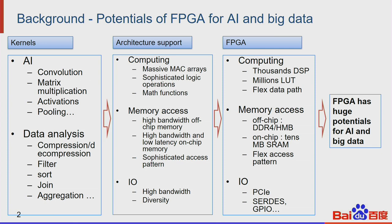We found the potential of FPGA for AI and big data. AI and big data applications can be applied to several basic kernels. For example, AI applications include convolution, matrix multiplication, activation, and other element-wise kernels. Data analytics includes compression, decompression, filter, sort, and aggregation. To support these kernels, we need a new architecture — a mesh MAC array for math functions, high bandwidth off-chip memory, high bandwidth and low latency on-chip memory, and high bandwidth IO.